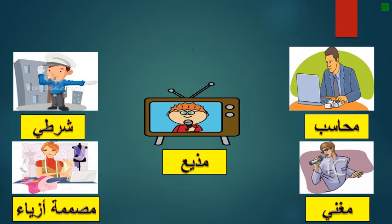Also we can use the word for the job of musawwimat azya. We can say, for example: ukhti ta'mal musawwimat azya — ukhti ta'mal musawwimat azya. That means my sister's work is fashion designer.